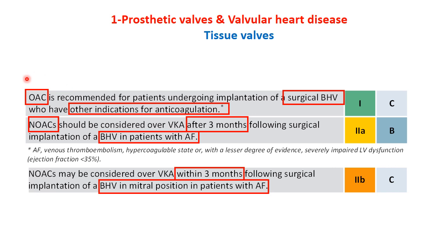Regarding tissue valves: oral anticoagulant is recommended for patients undergoing surgical bioprosthesis implantation who have other indications for anticoagulation. NOACs should be considered over vitamin K antagonists after three months following surgical implantation of a bioprosthetic valve in patients with AF. NOACs may also be considered over vitamin K antagonists within three months following surgical implantation of a tissue valve in the mitral position in AF patients, though this is only a Class IIb recommendation.